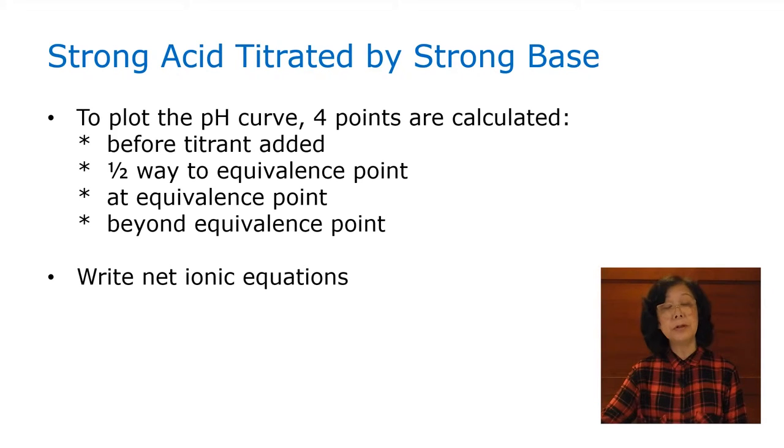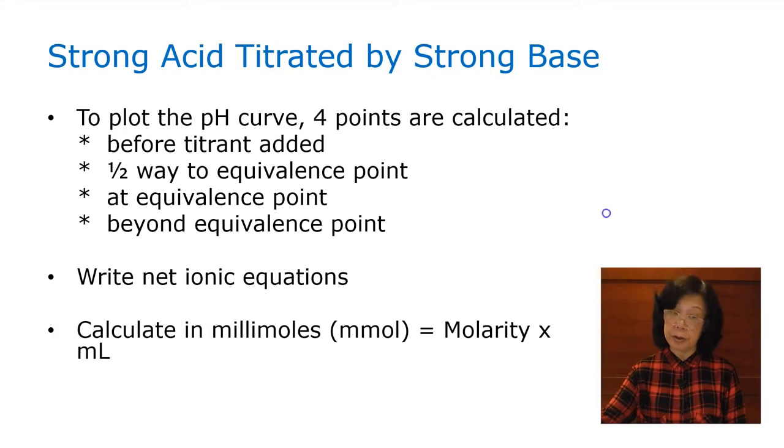What we need to do is to write the proper net ionic equation of the titration reaction. We also need to calculate moles of the species in millimoles. It's much easier to calculate when you take molarity times milliliter without going back and forth to convert into liter. We also make use of the ICE table, initial, change, and end table to calculate pH.